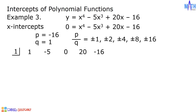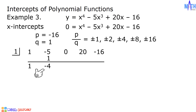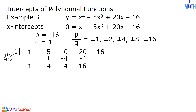Let us try positive 1 as a possible root. Bring down 1. 1 times 1 equals 1. Negative 5 plus 1 equals negative 4. 1 times negative 4 equals negative 4. 0 plus negative 4 equals negative 4. 1 times negative 4 equals negative 4. 20 plus negative 4 equals 16. 1 times 16 equals 16. Negative 16 plus 16 equals 0. Since the remainder is 0, it means that 1 is one of the roots. We have x-intercept 1, 0.